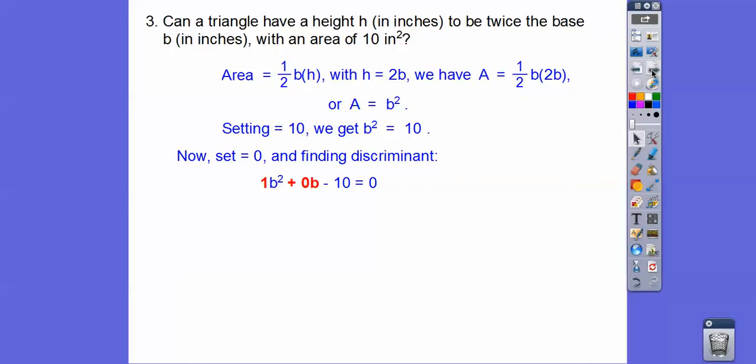Remember, a is 1. b is, so I'm sorry for the b squared right there. But think of this as 1x squared plus 0x minus 10, where there's a, there's b, there's c.